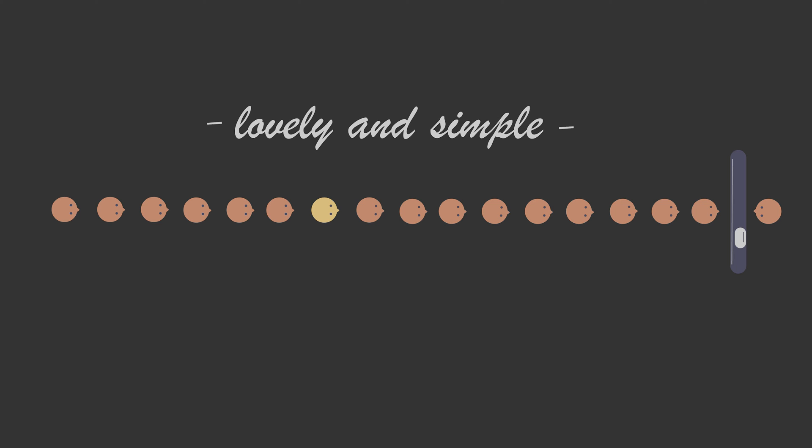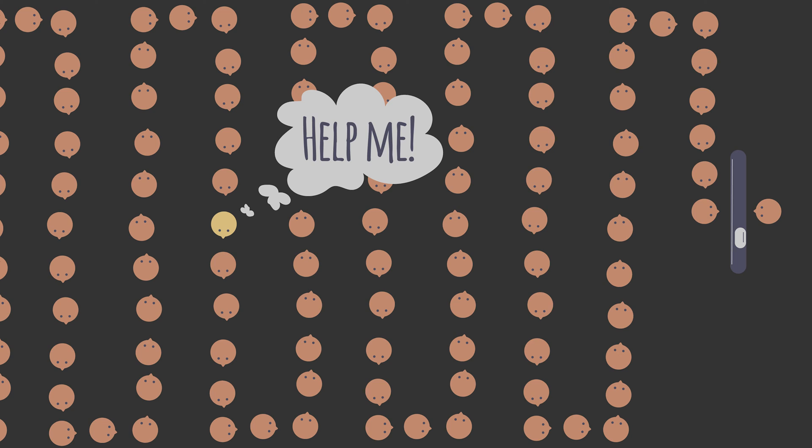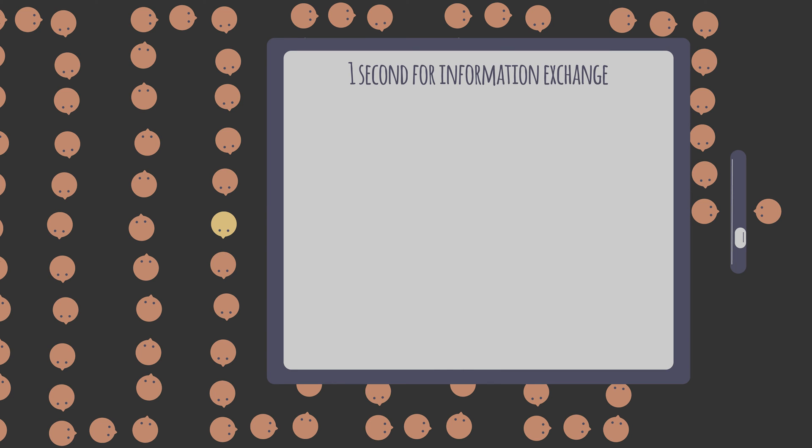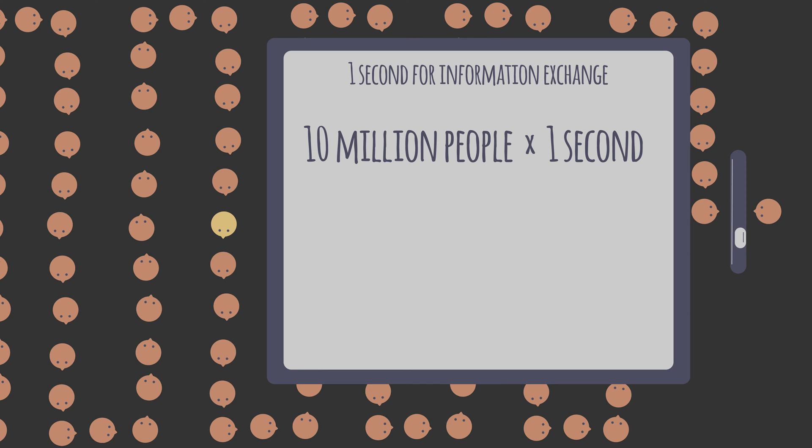Now that's a lovely and simple solution to this problem. But suppose there are 10 million people in this line. If it takes one second to do an information exchange, then it's going to take about 10 million people times one second divided by 3600 seconds per hour divided by 24 hours per day, or 115 days for the last person in line to learn that he or she is number 10 million. That person in nearly four months' time could have probably finished a whole other OMSCS degree.